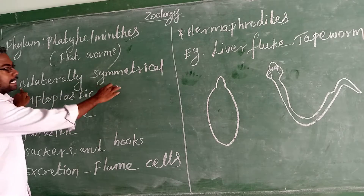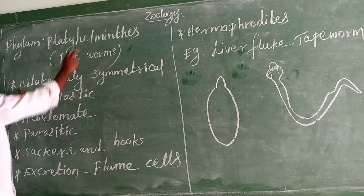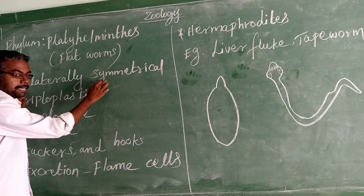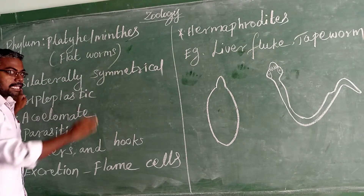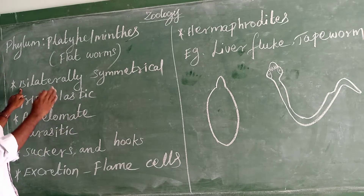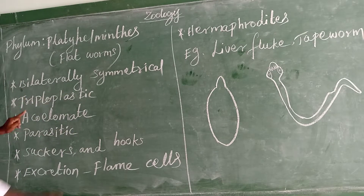The first feature is Bilaterally Symmetrical. This organism is bilaterally symmetrical — organs are kept along with the axis.